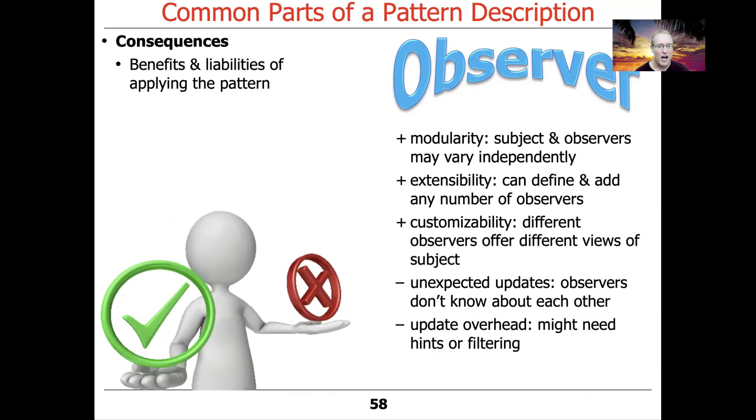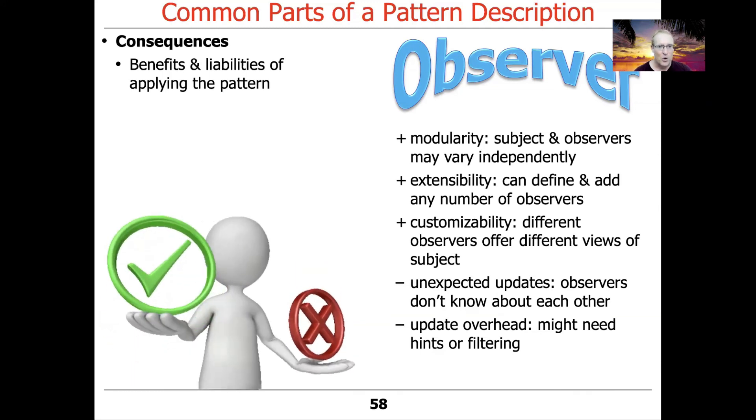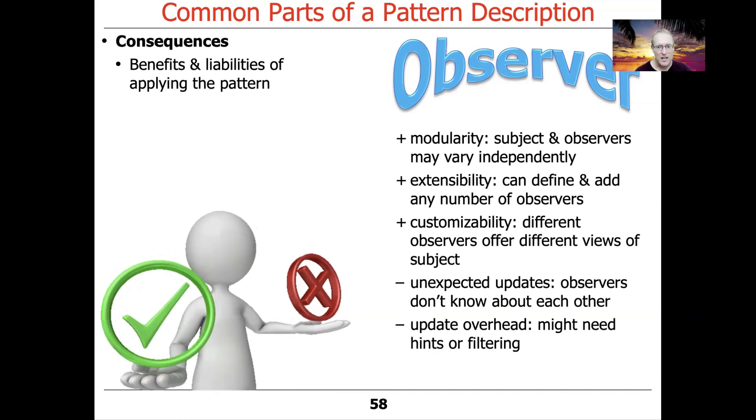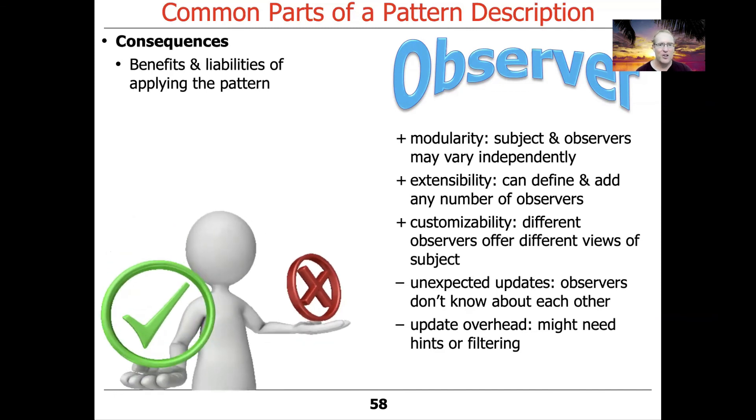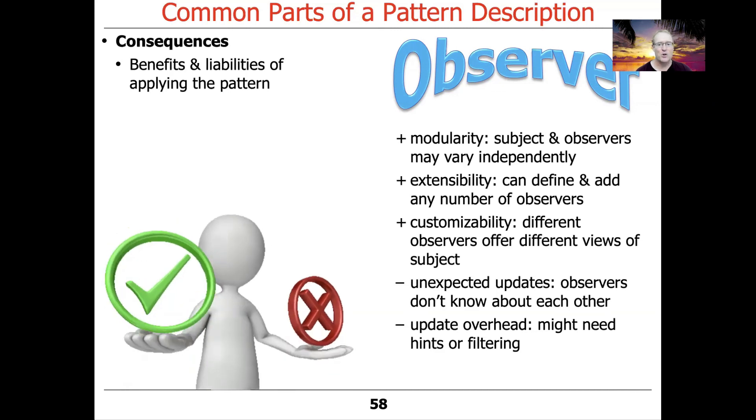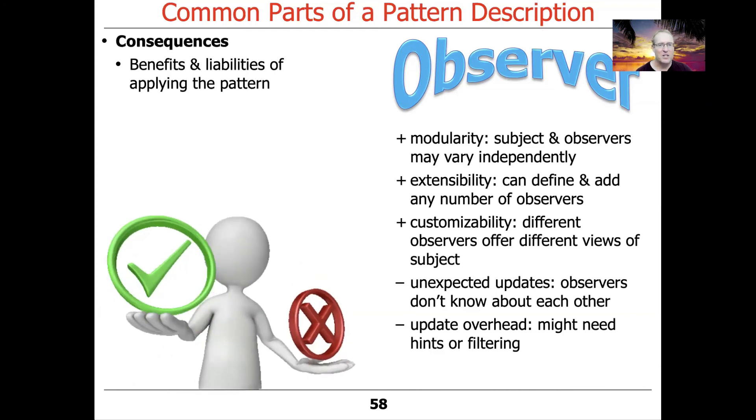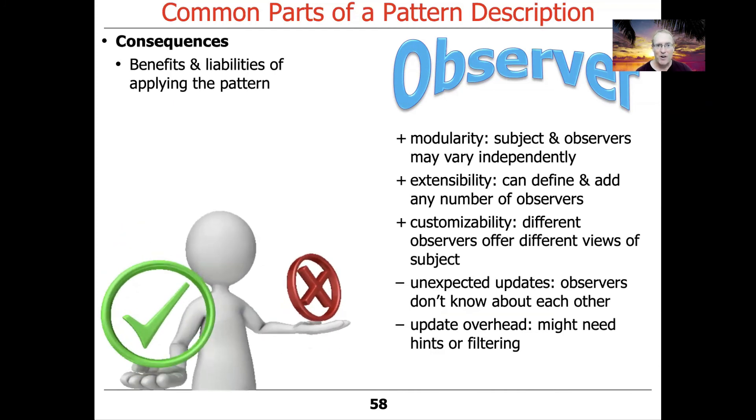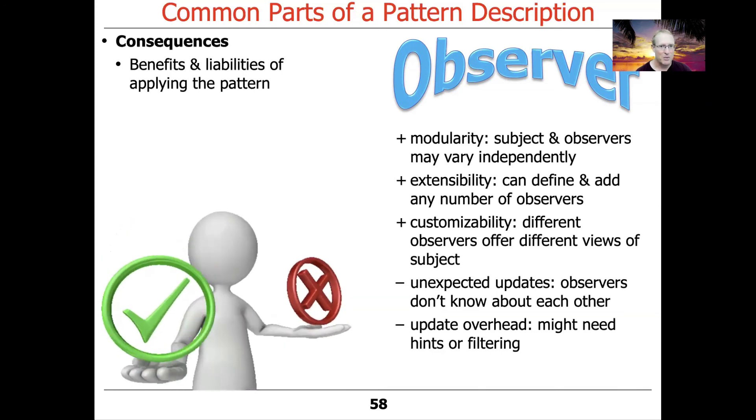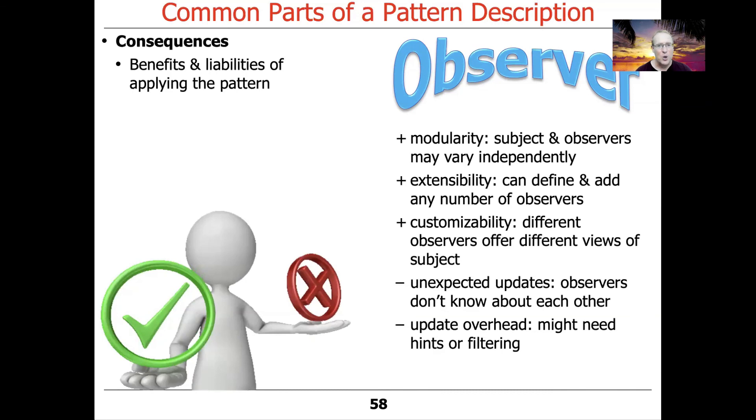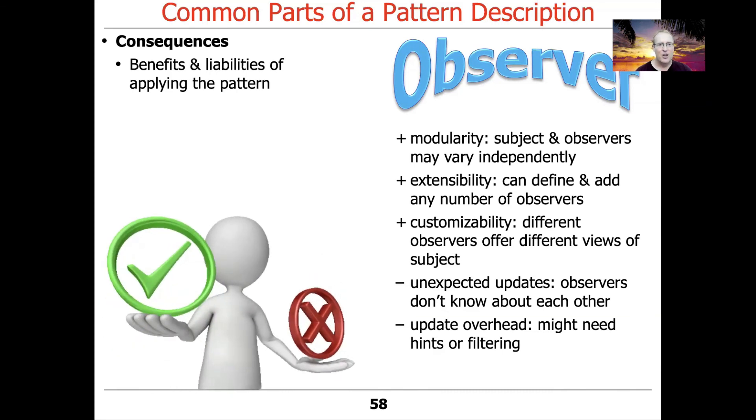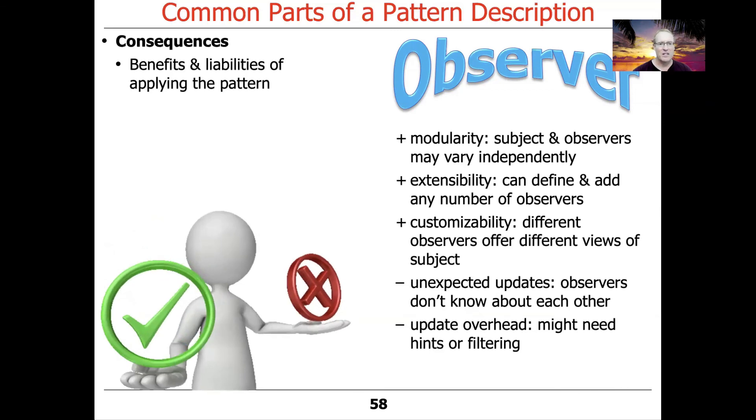There's also some liabilities or cons. You don't always know who's telling you to update yourself. You may get unexpected updates. You may have broadcast storms where you're updated and then everybody else is updating themselves, and before you know it, you're ending up with lots of update calls that are inefficient and waste time and space resources. You may also have the overhead of updates - not every observer may need to be notified when every event happens. In that case, you may have to put in some additional capabilities like filtering or correlation mechanisms to cut down on this update overhead. It's usually the case that when there are deficiencies or liabilities with patterns, the way to solve them is to either apply a different pattern or apply other patterns to address those liabilities.